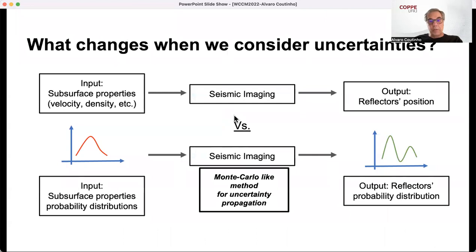What changes when we consider uncertainty in the workflow? Here in the top, you see this standard seismic image workflow. You have the input, subsurface properties like velocity, density, etc. And then you do a seismic image, basically solve an inverse problem, acoustic, elastic, it doesn't matter, and the output are the reflector position. When you think about uncertainty, your input is the subsurface properties probability distribution. You do the seismic image using Monte Carlo-like methods to propagate the uncertainties in your properties, and output, of course, the reflector probability distribution.